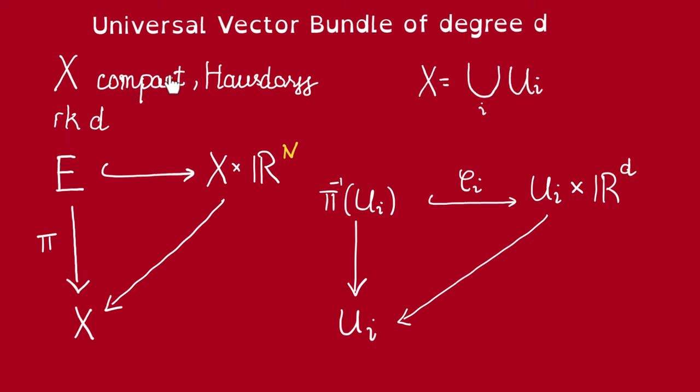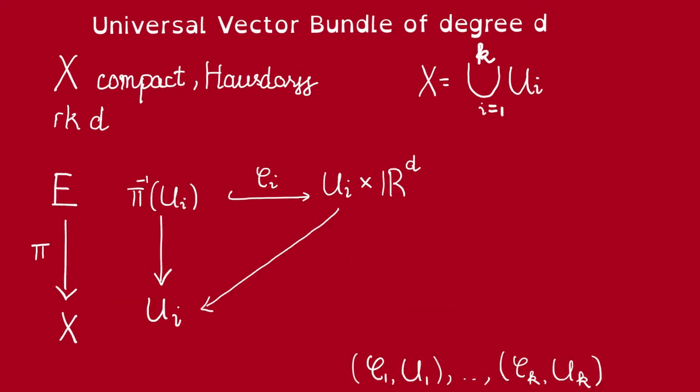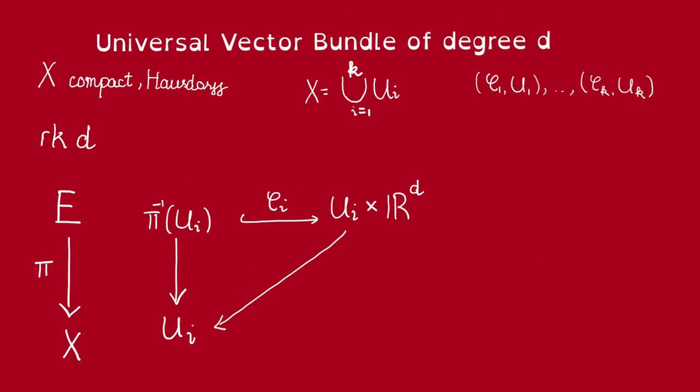But X is compact though, so we can assume that this cover is finite, and thus we have a finite collection of local trivializations of this bundle. Observe that this map phi gives us local coordinates on the bundle using this projection map. To be more precise, let's say we have a point e in the fiber over some x here. Then phi is going to map it to x, some point in R^d, and we can view this as the coordinate of e. This point here is just going to be p_2 of phi_i of e.